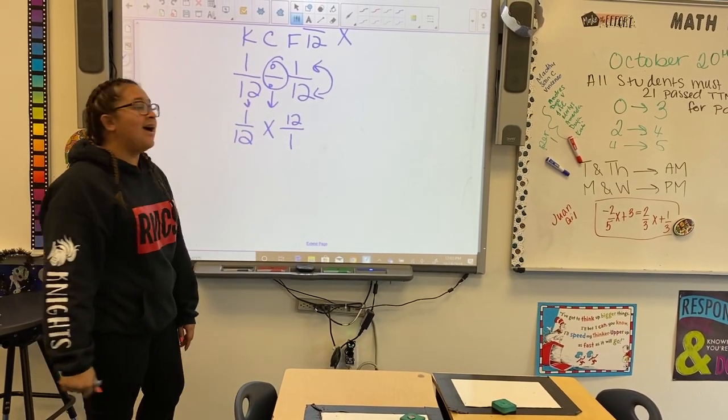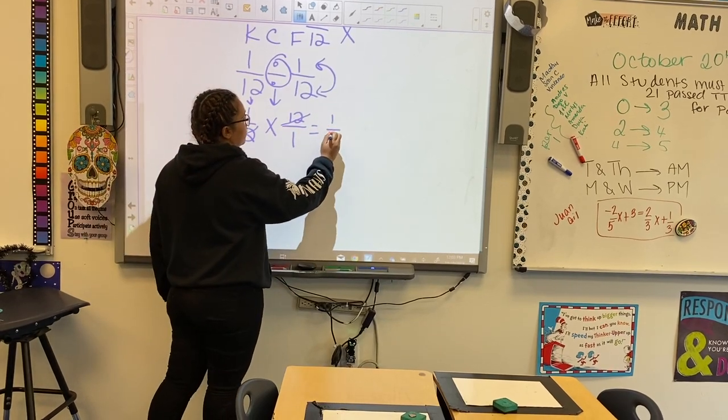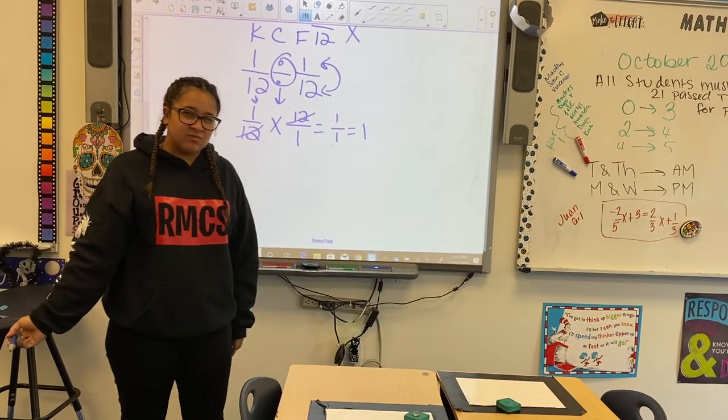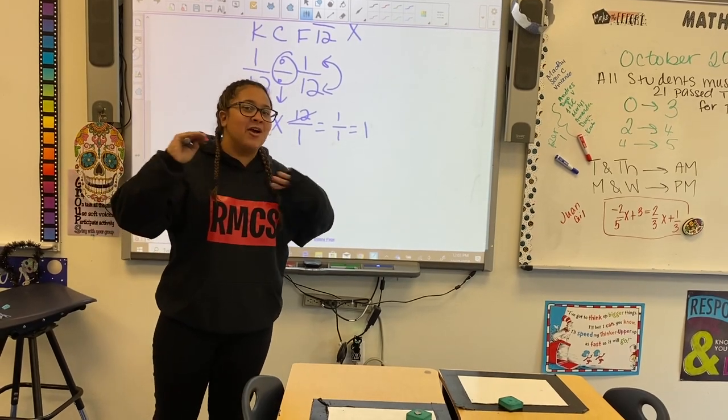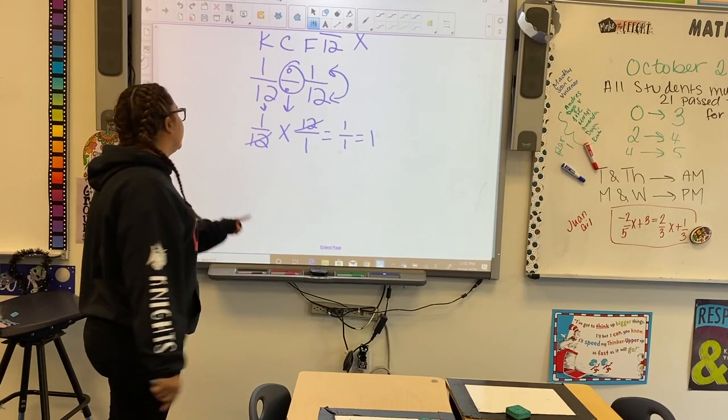And what's going to happen? Everything is going to cancel out. Give me 1 over 1, which equals 1. Remembering? I hope so. Should be in your notebooks. If you're still having problems, please go back and check.